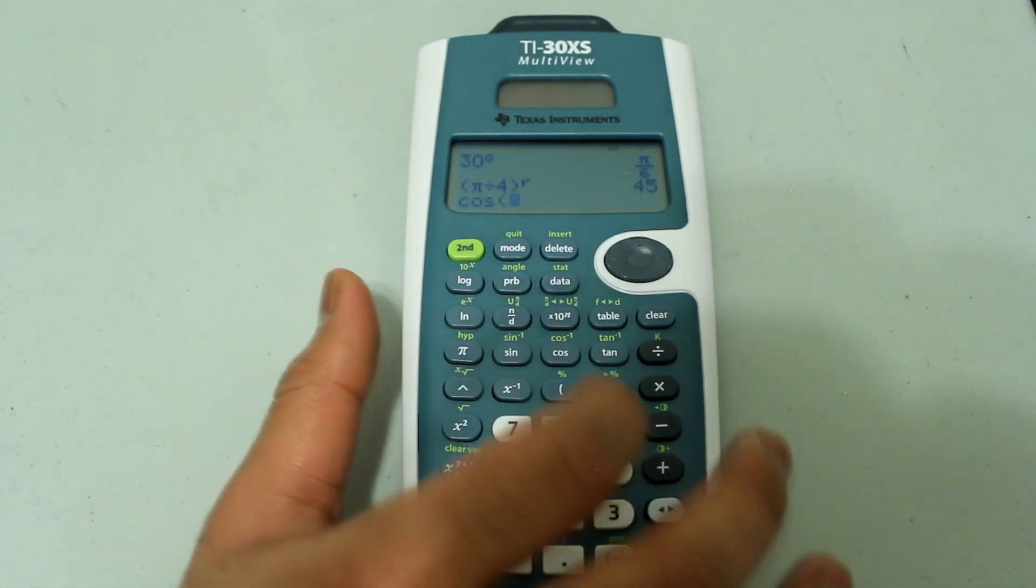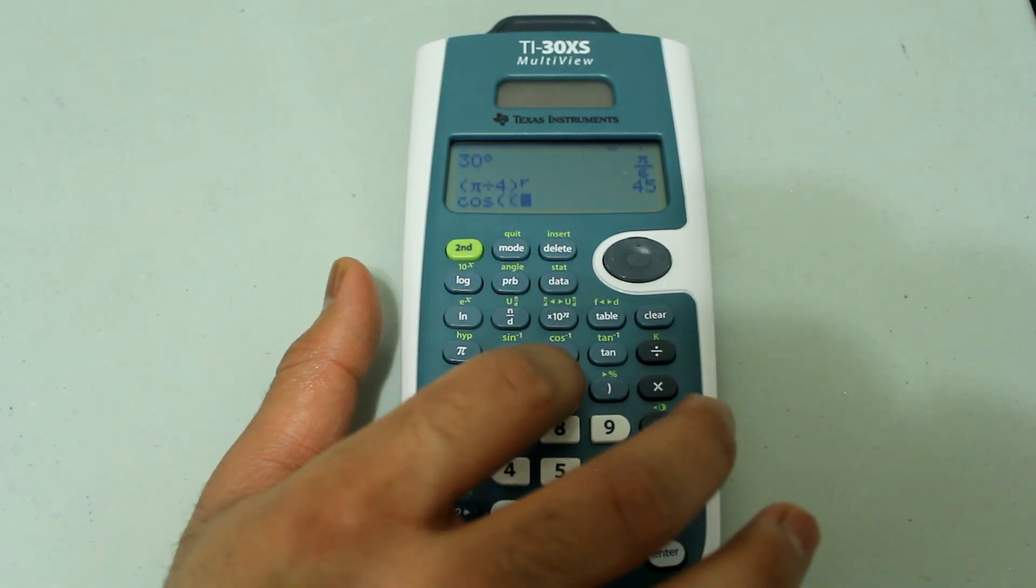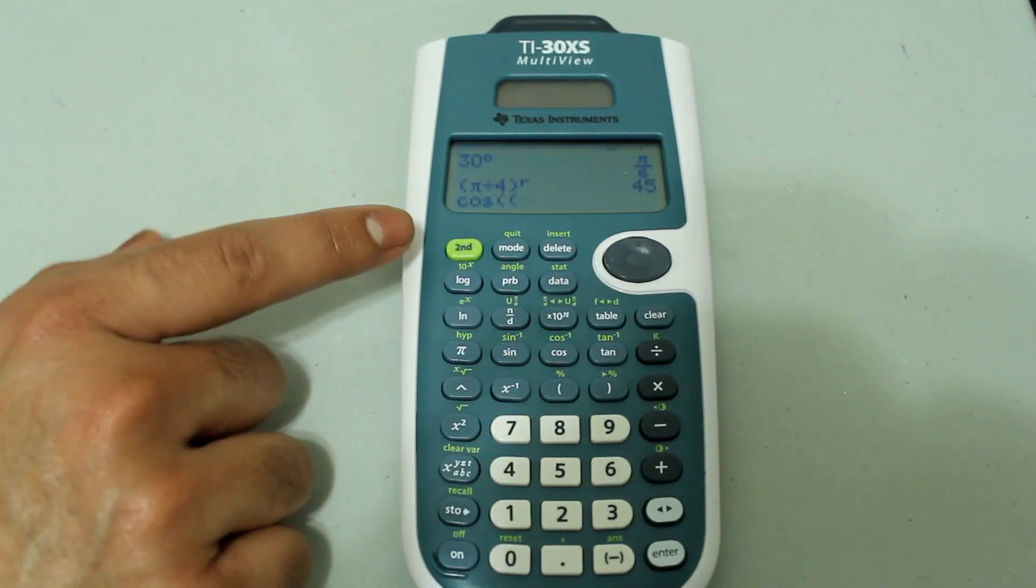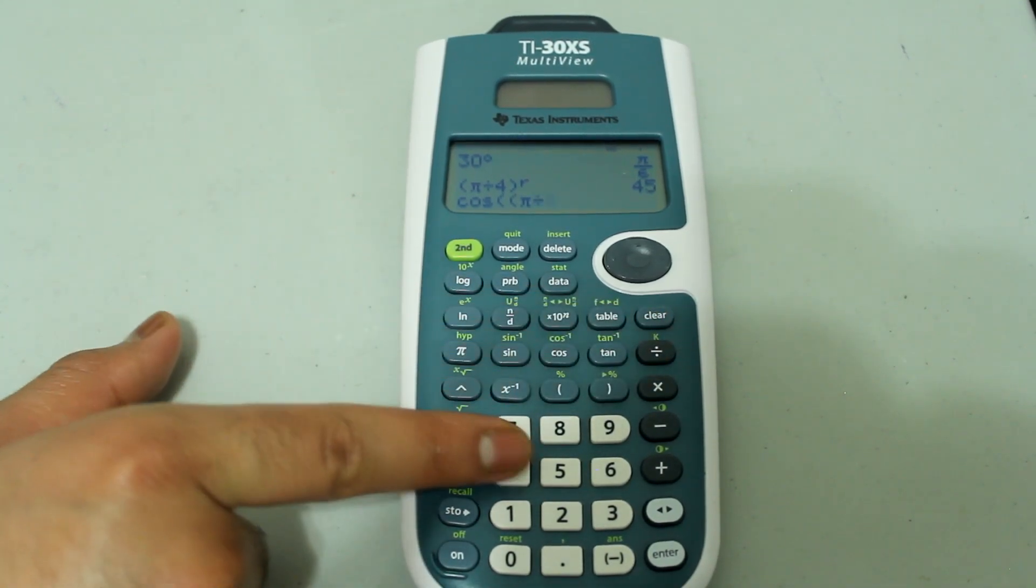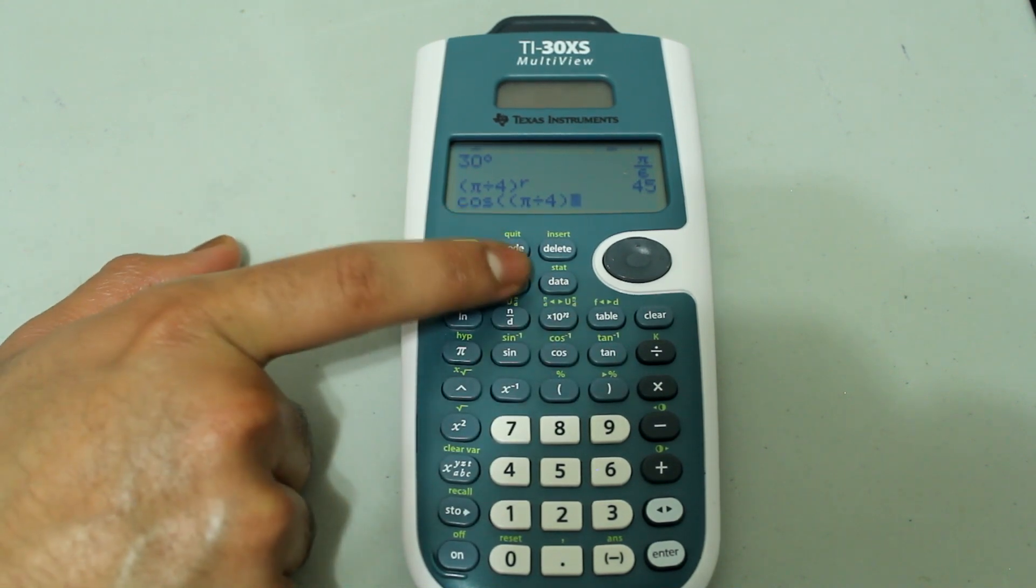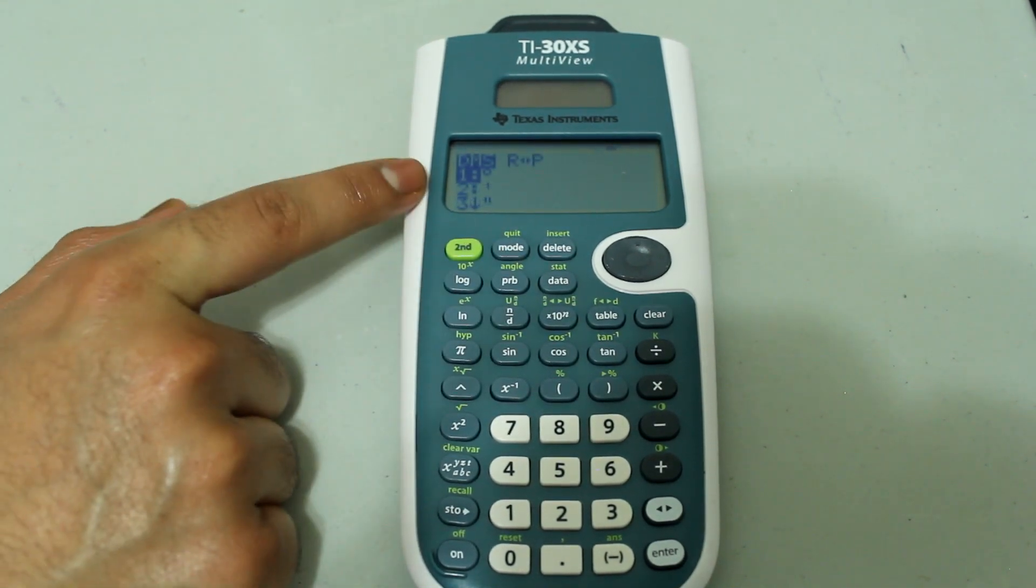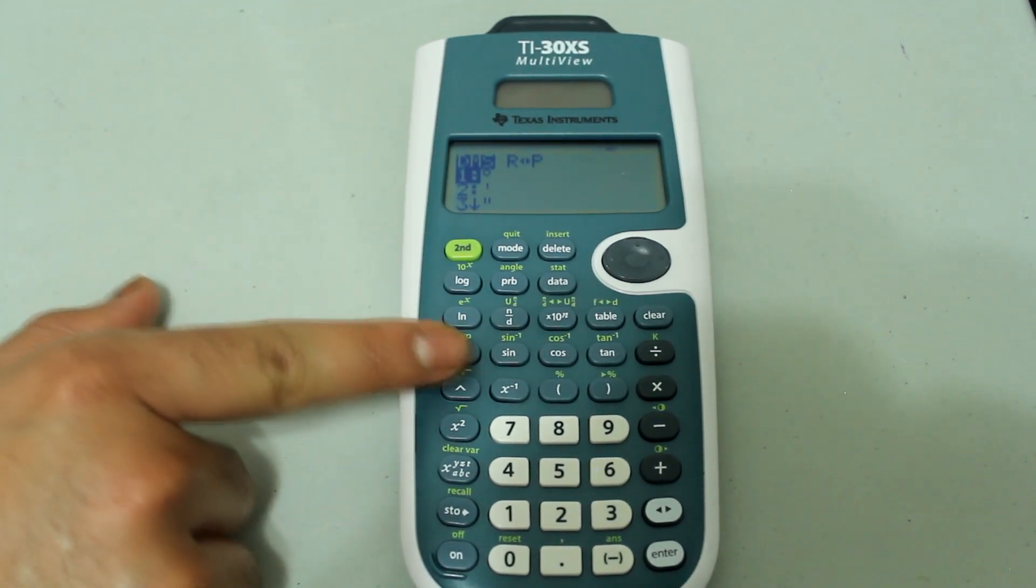So let's do cosine and that opens one parenthesis. I'm going to open another one and I'm going to type in pi divided by 4. Then close the parenthesis, press second and the PRB button.